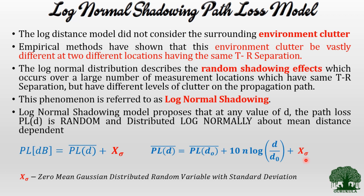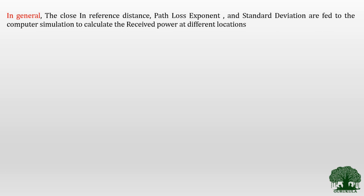Xσ is a random variable because the shadowing effect is random — we cannot add a constant to represent it; we must add a random variable. When a variable is random, it is mandatory to represent its mean, standard deviation, and distribution. Xσ has zero mean and is Gaussian distributed with standard deviation σ. In general, the values of d₀, path loss exponent n, and standard deviation are fed to a computer simulation environment to calculate received power at different locations.